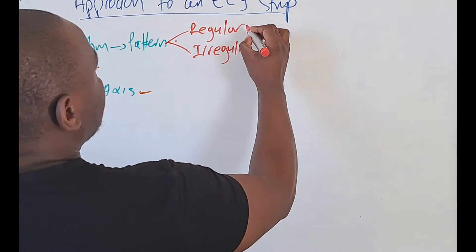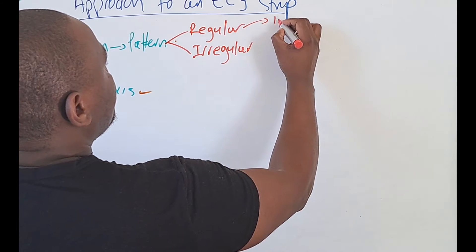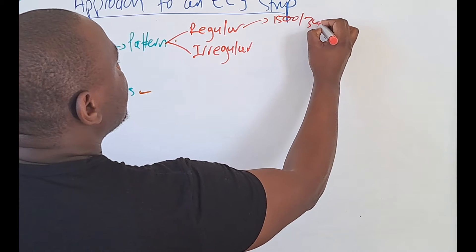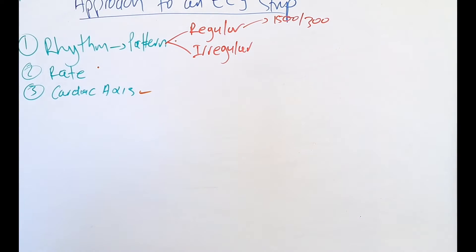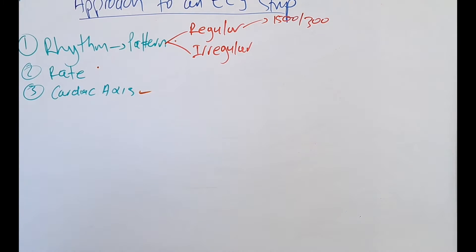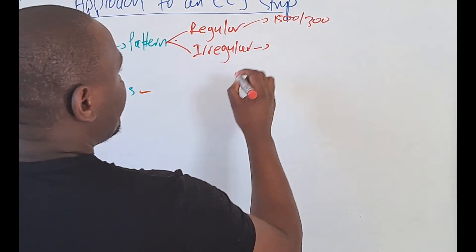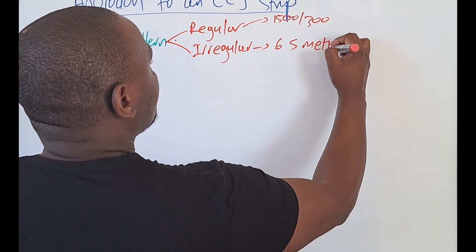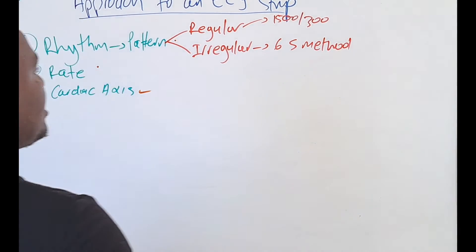If it's regular, you can use the 1500 small box method or the 300 big box method to calculate the heart rate. But it has to be regular — the heart rate has to be regular for you to use either of those two methods. When it's irregular, we did two videos on this: you use the six-second method when it's irregular.